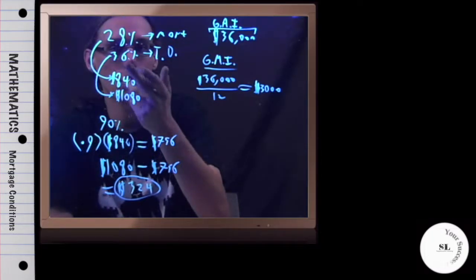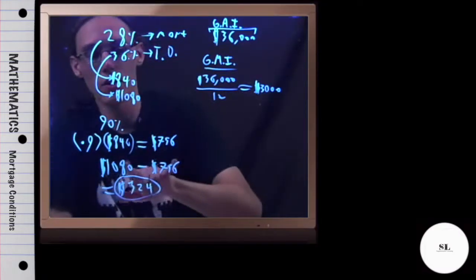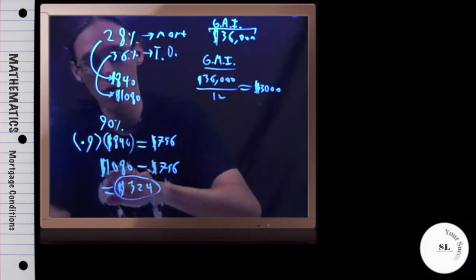Now that's step one, that's if we're making 90% of the maximum we can afford on our mortgage payments, that means we're paying $756 a month.